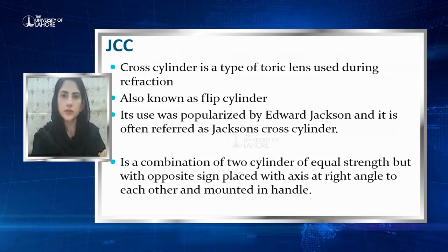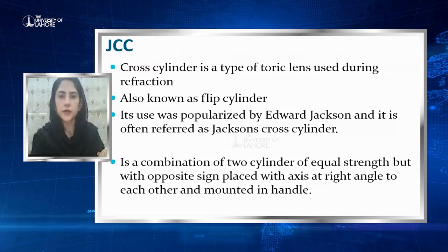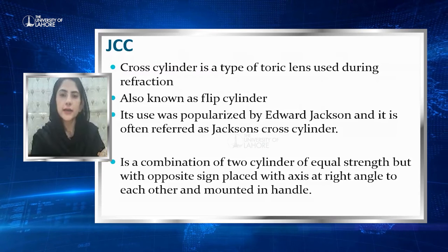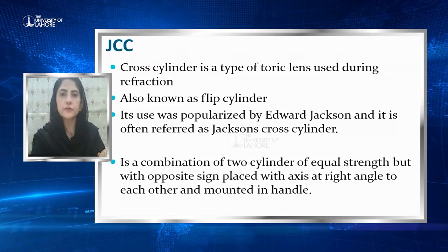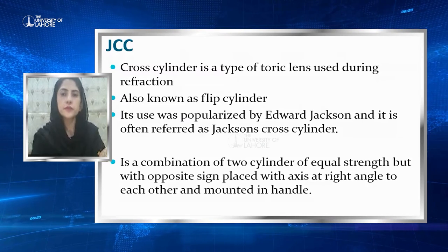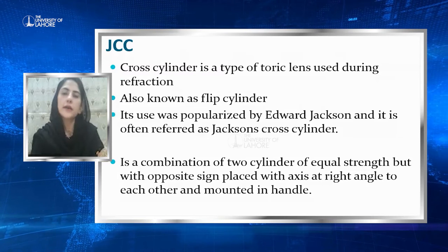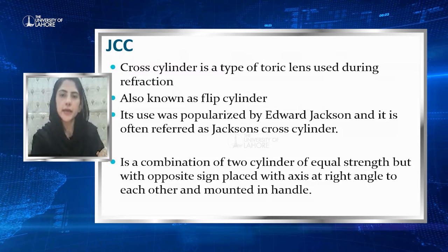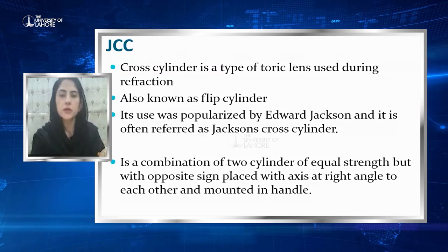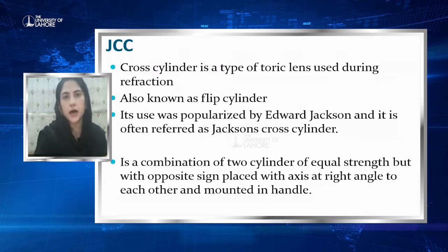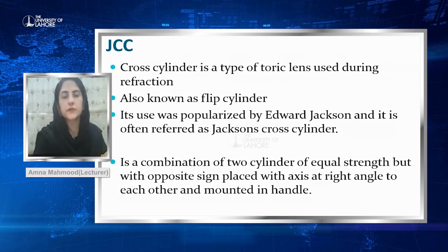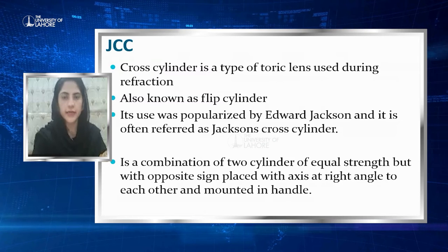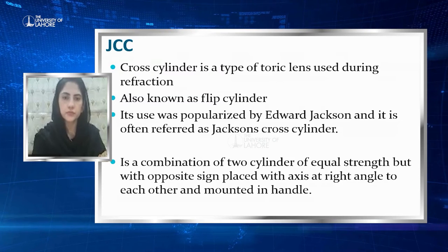What is a Cross Cylinder? A Cross Cylinder is a type of toric lens. A toric lens is a combination of two different optical parts — a spherical and a cylindrical lens — perpendicular to each other. These lenses are used for people wearing contact lenses who have astigmatism, as they correct both corneal and lenticular astigmatism.